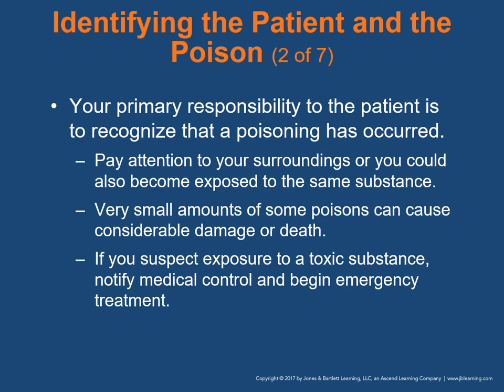Our primary responsibility is to recognize that a poisoning has occurred. Pay attention to surroundings, especially with a patient who has an altered mental status, may be a little violent or quarrelsome. Look for something that will tip us off to a possible poisoning or substance abuse — whether it be alcohol, marijuana, or other drugs. In very small amounts, some poisons can cause considerable damage or death. Also be careful about being exposed to the poison yourself — recently with fentanyl, caregivers and law enforcement have both been exposed to opioids and suffered untoward effects.